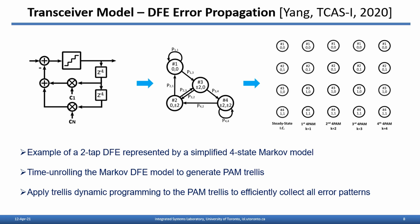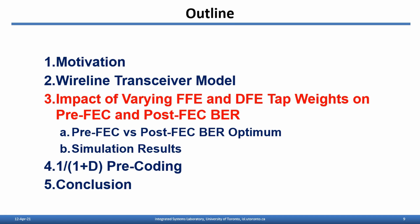Here we would also like to briefly introduce how DFE error propagation is considered in post-FEC bit error rate calculation. Here we have an example of a two-tap DFE. The assumption is that the two registers in the DFE feedback group can store two outcomes: one where a correct decision is made by the DFE and one where it is not. Therefore, the two-tap DFE model can be represented by a four-state Markov model. By time-unrolling this Markov model, we can generate a BCJR trellis, then apply trellis dynamic programming to efficiently collect all error patterns that contribute to post-FEC bit error rate.